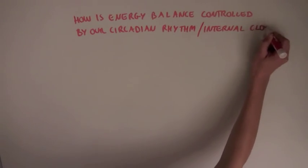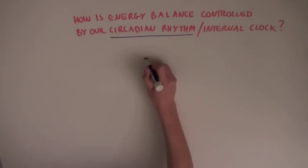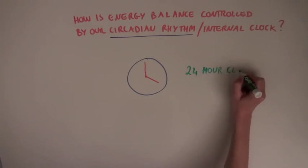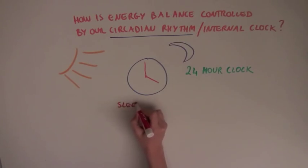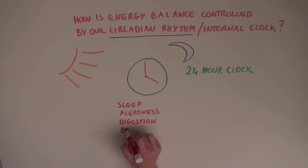What is a circadian rhythm, you may ask? Well, our bodies function on a 24-hour clock that is influenced by the day and night cycle, that controls sleep, alertness, digestive activity, etc.